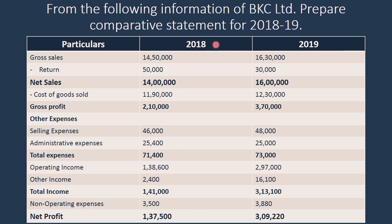We have got two years' figures — for 2018 and for 2019. Gross sales were 14 lakhs 50,000 in 2018 and in 2019 it has gone to 16 lakhs 30,000. Net sales were 14 lakhs, which has gone up to 16 lakhs. Gross profit was 2 lakhs 10,000, now it is 3 lakhs 70,000. Expenses were 71,400, now 73,000. And total income went from 1 lakh 41,000 to 3 lakhs 13,100. Net profit went up from 1 lakh 32,500 to 3 lakhs 9,220. Grossly looking at the figures, we can say the figures have increased.